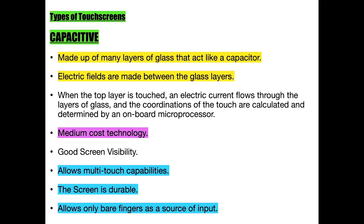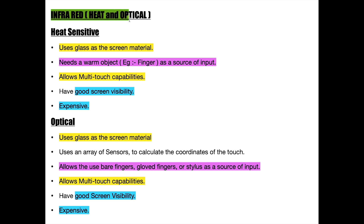The next type of touch screen is the infrared touch screen, which is separated into two categories: the heat-resistive and the optical touch screens. The heat-resistive touch screen uses glass as the screen material and only allows a warm object as a source of input. Its advantages are good screen visibility and multi-touch capabilities, though its major drawback is its immense cost. The optical touch screen also uses glass and uses an array of sensors to calculate the coordinates of the touch. It allows bare fingers, gloved fingers, or a stylus as input, but shares the same high cost drawback as the heat-resistive type.